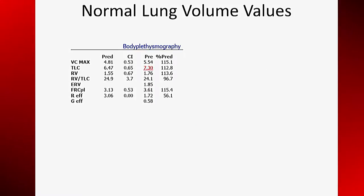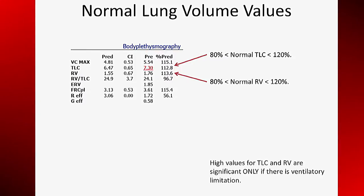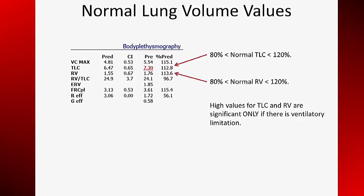Lung volumes must be interpreted within the context of ventilatory capacity. If there is no ventilatory defect, the lung volumes do not matter. The lower limit of normal for total lung capacity is 80% of predicted. If there is a ventilatory impairment, then a TLC below 80% defines a restrictive ventilatory defect. If there is a ventilatory defect, then a TLC greater than 120% suggests hyperinflation. Hyperinflation is often seen with airflow obstruction. Similarly, the normal limits for residual volume are 80% to 120% of predicted. High values for TLC and RV are only significant if there is a ventilatory limitation.